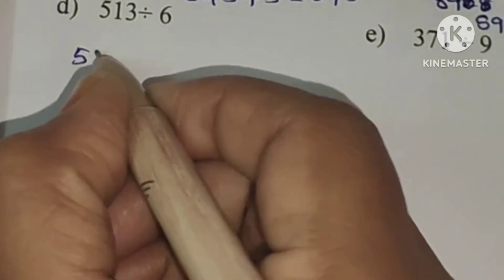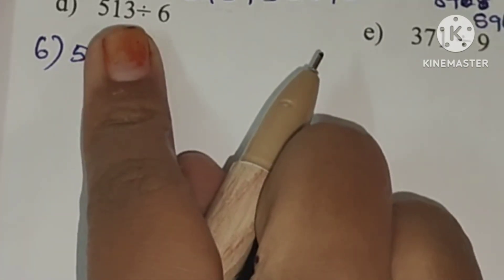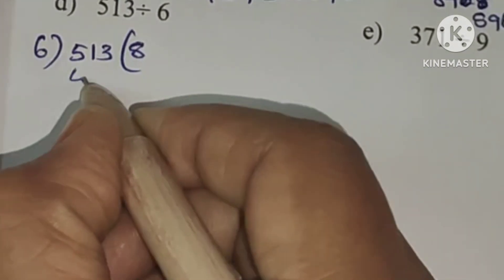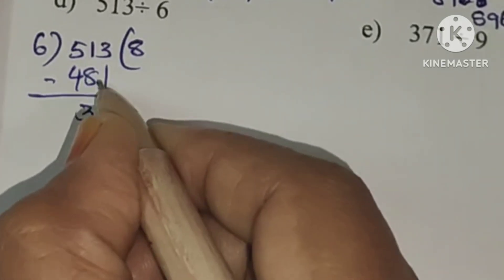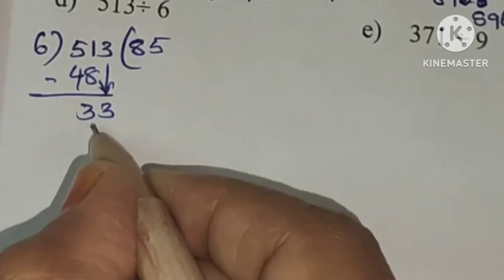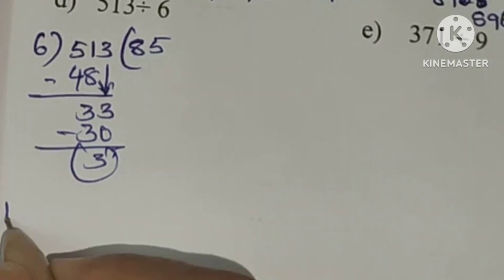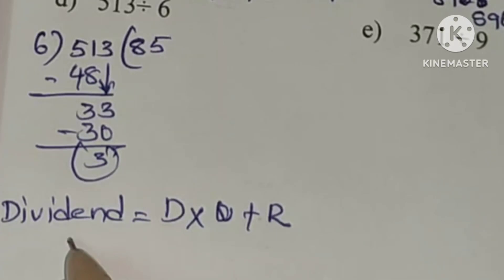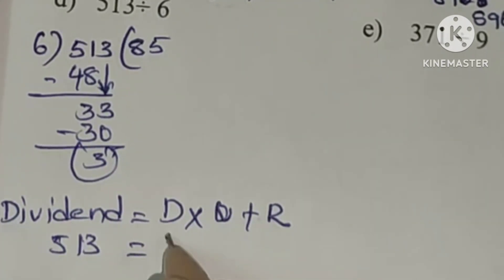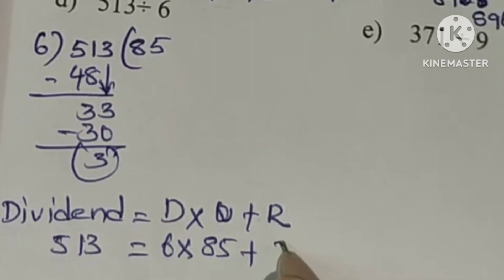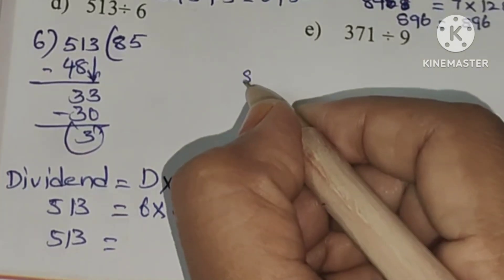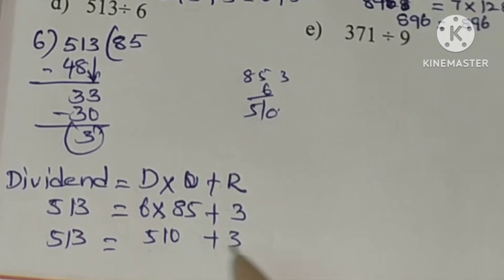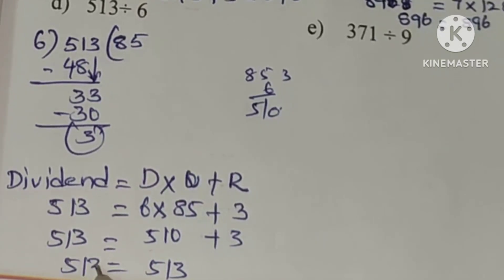Next: 513 divided by 6. First digit 5: 6 nines are 54, subtraction gives 1 remainder with next number 3 making 33. 6 eights are 48, subtraction gives 3. Next number 33: 6 fives are 30, subtraction gives remainder 3. Checking: 513 equals 6 into 85 plus 3. 6 times 85 is 510, plus 3 equals 513.